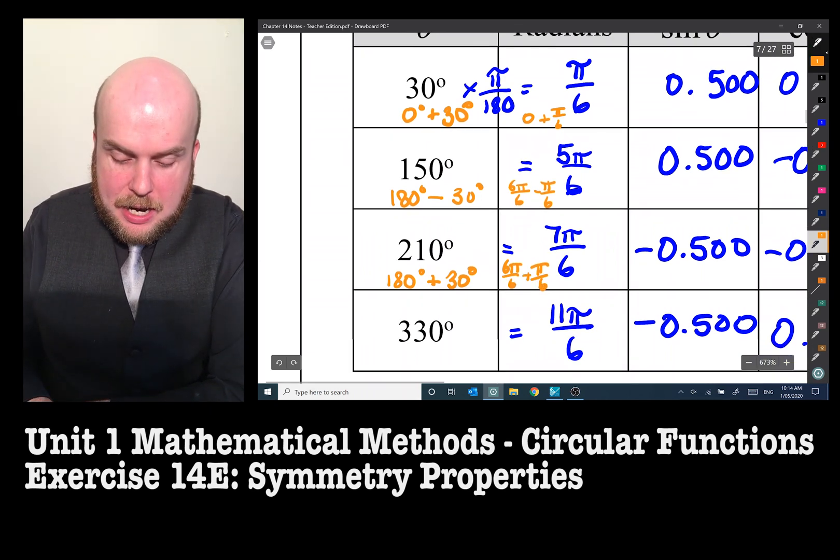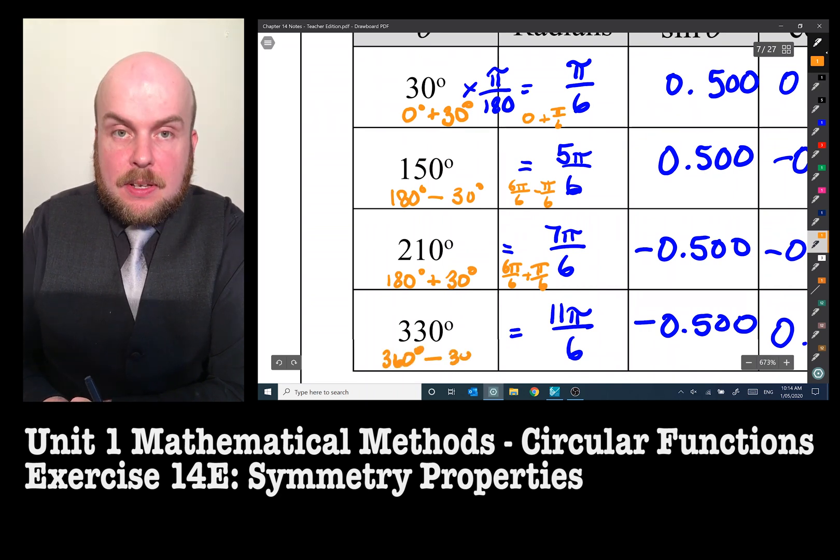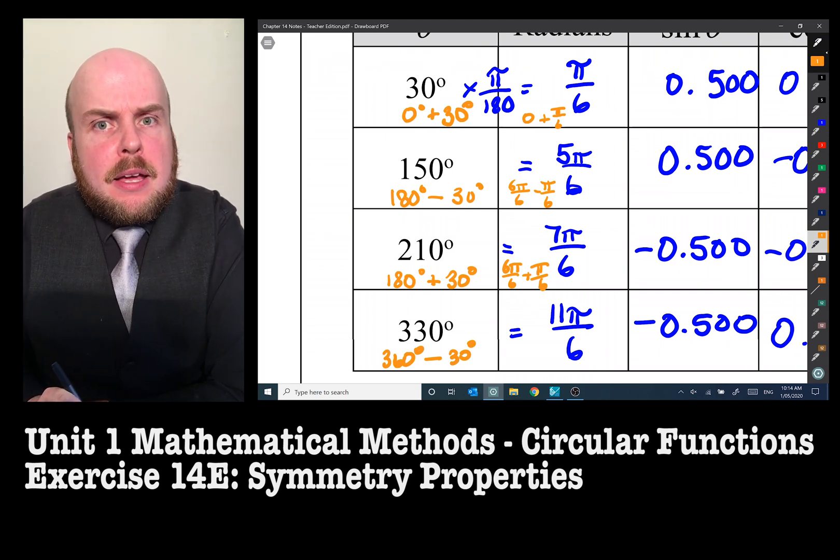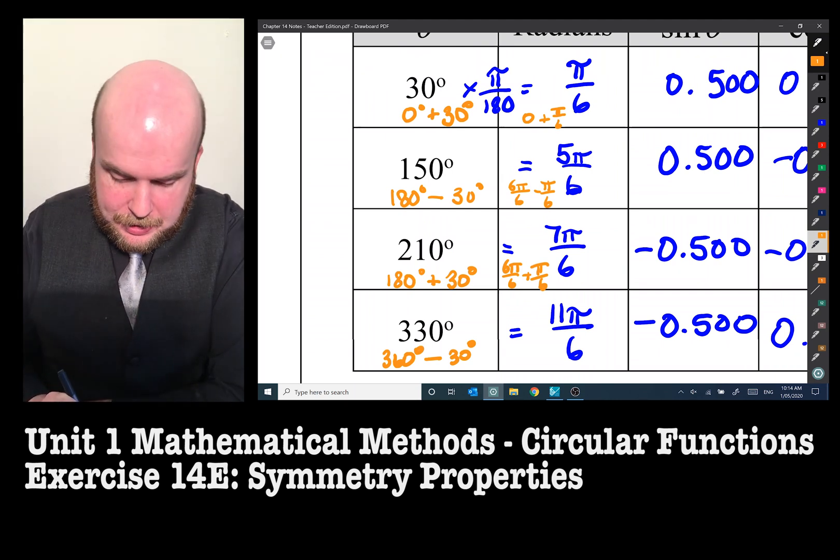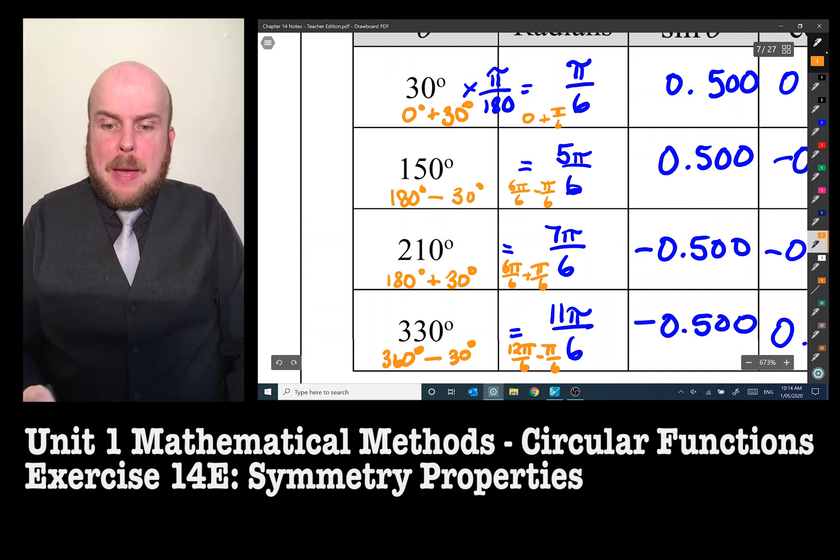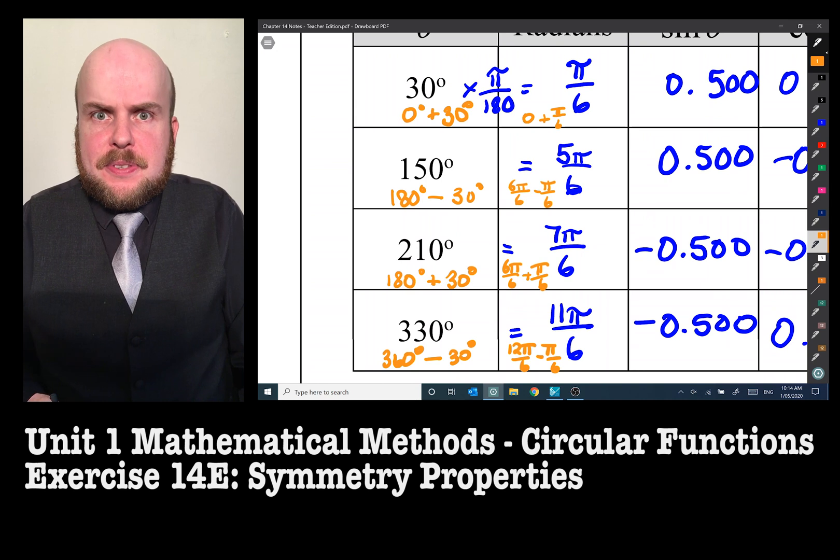210, that's 180 plus 30 degrees, or 6π on 6 plus π on 6. And then 330 is 360 degrees minus 30 degrees.